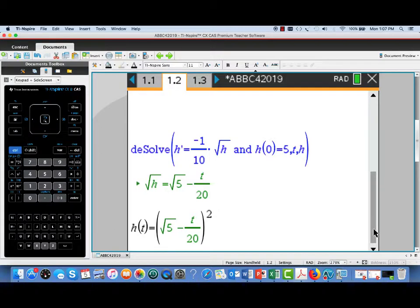Now, if you have a TI Inspire with a CAS, or Computer Algebra System, you could certainly check your answer by using the DE solve command. Notice the syntax here. We're basically able to enter the differential equation exactly as we saw it in the problem, along with the initial condition, AND h of zero equals five.